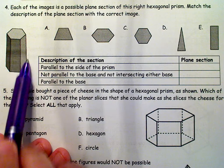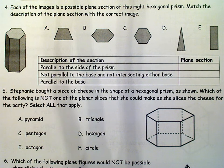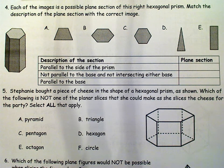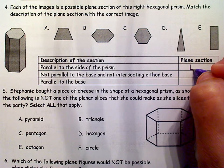Those are your bases. So these rectangles are your sides, and if it's parallel to the side, it's going to take on the shape of the side, which is a rectangle. So parallel to the side is going to make a rectangle, which is going to give me E.